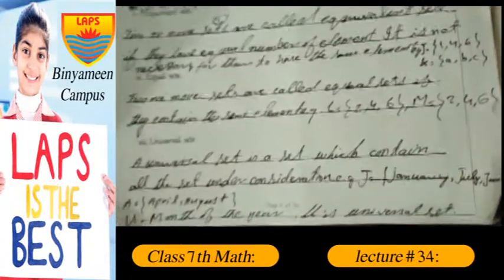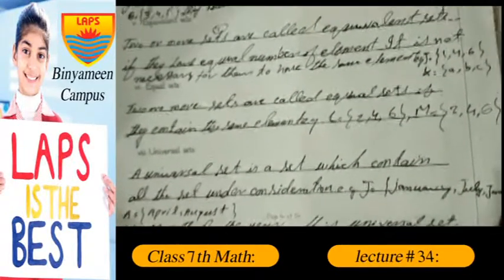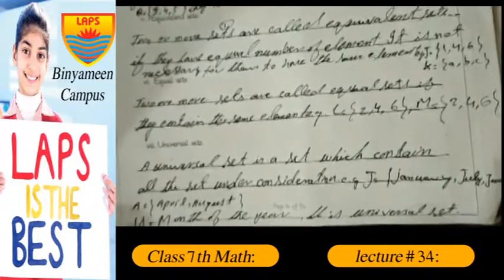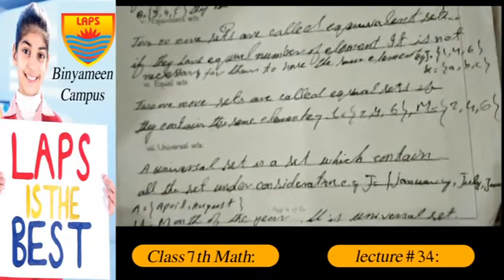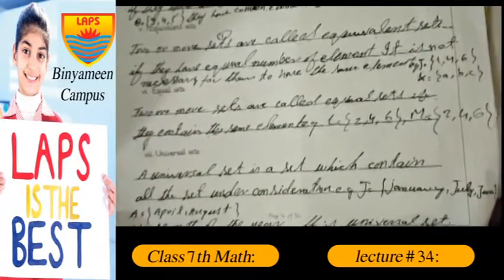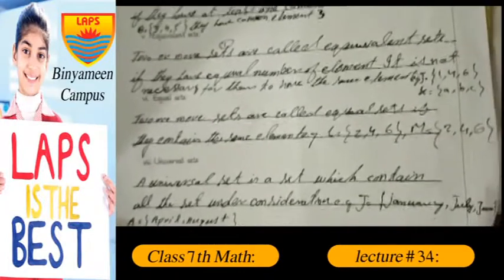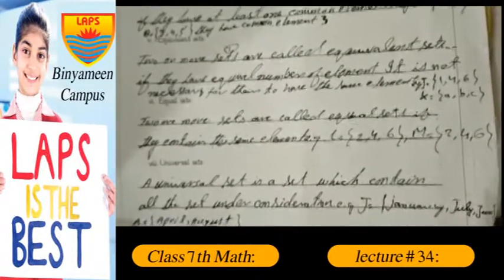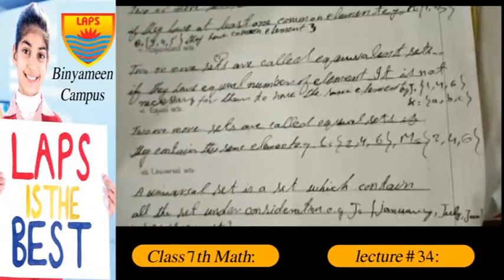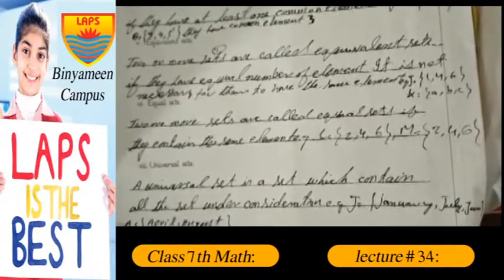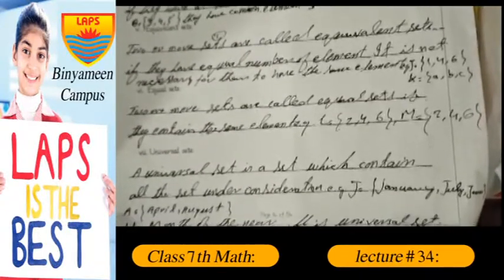Equal set: two or more sets are called equal sets if they contain the same elements. For example, set L equals {2, 4, 6} and set M equals {2, 4, 6}. These are called equal sets.